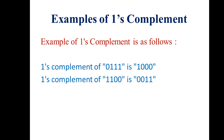Let's take another example. Find the 1's complement of 1100. You toggle each bit: the first 1 becomes 0, the next 1 becomes 0, the 0 becomes 1, and the last 0 becomes 1. So the 1's complement of 1100 is 0011.